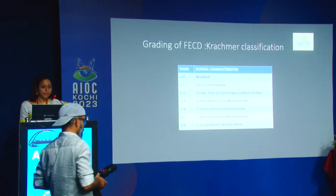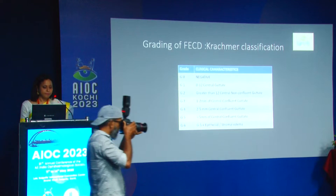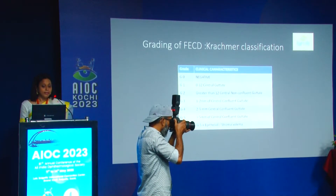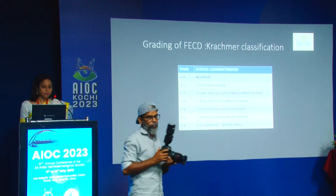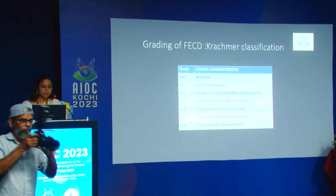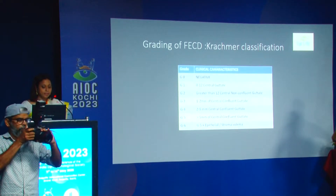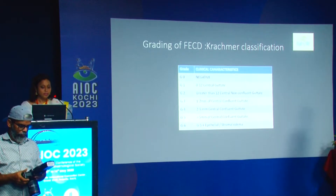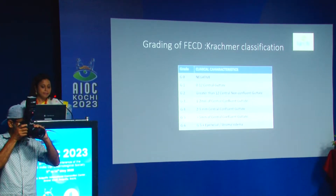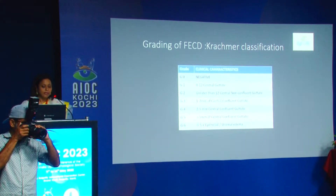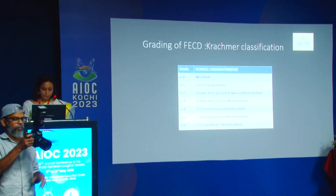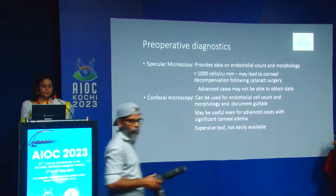Grade 1 is early disease with 0 to 12 central guttae; grade 2 has more than 12 non-confluent guttae. It is usually grade 5 — more than 5 mm of central confluent guttae — or grade 6, which is grade 5 with additional epithelial or stromal edema, that requires major corneal interventions.